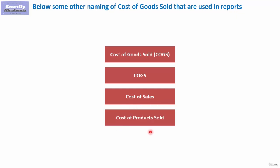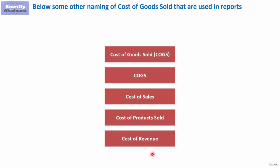In many cases they also call it cost of product sold, which is the case for Philips. And finally, recently quite often they just call it cost of revenue. In S-1 reports of companies in the USA that are going through an IPO, they usually present it this way. Also on Yahoo Finance, this is quite often called like this. So those names usually mean roughly the same thing.